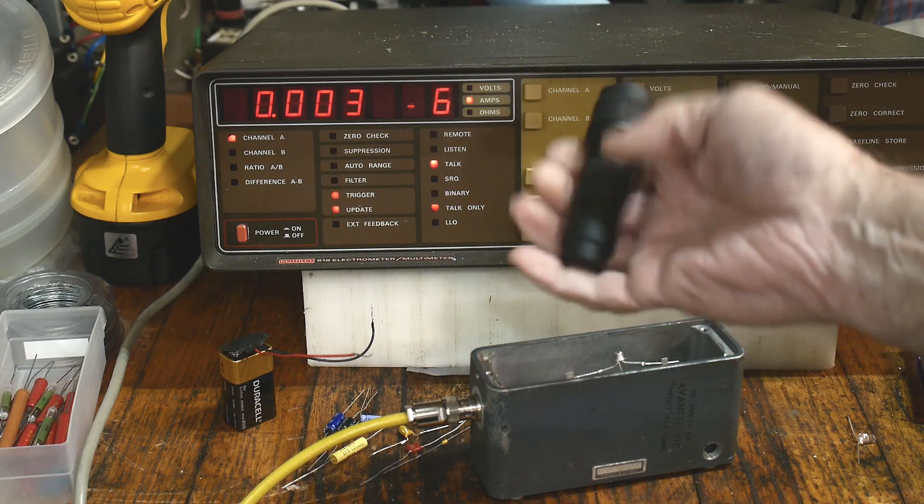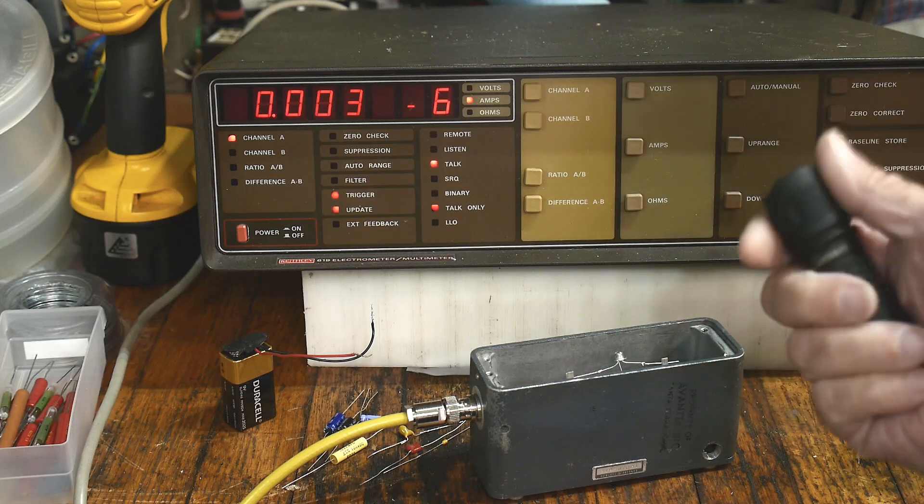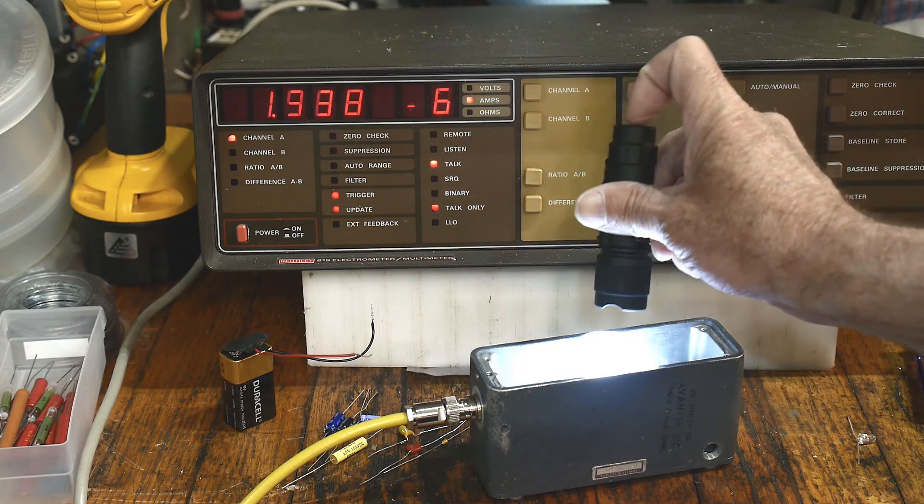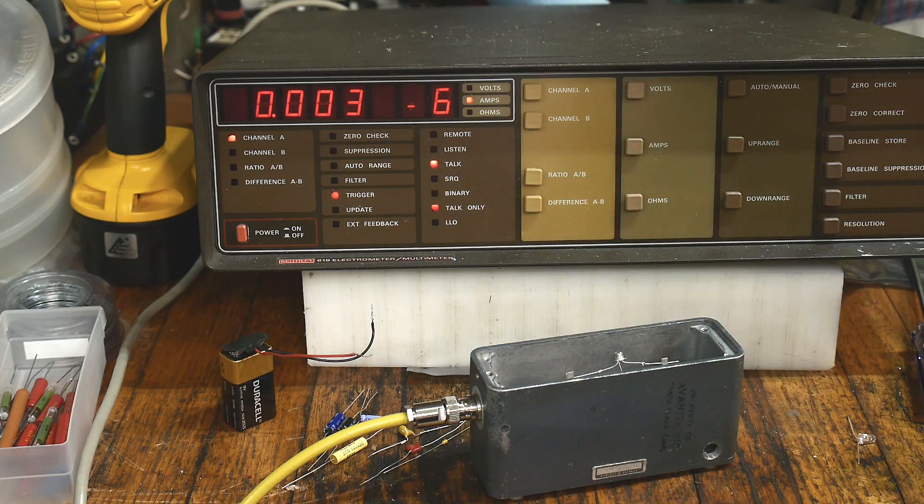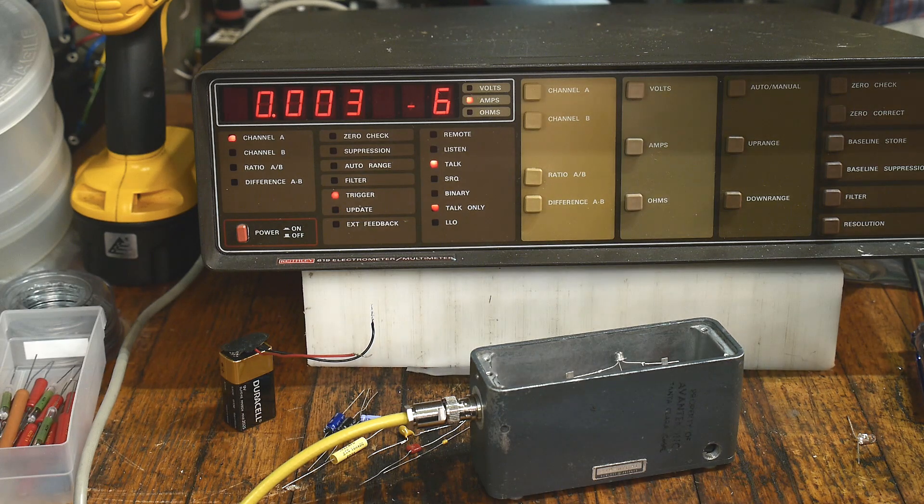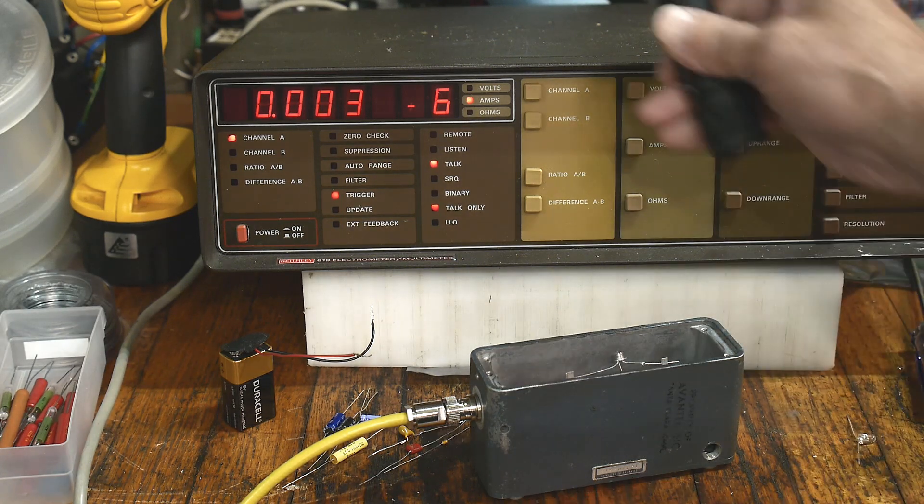And they work better with infrared light. So this is visible light, this flashlight. If I had infrared light, it would work even more efficiently. The band gap of silicon is up around 1.3 microns or something like that.